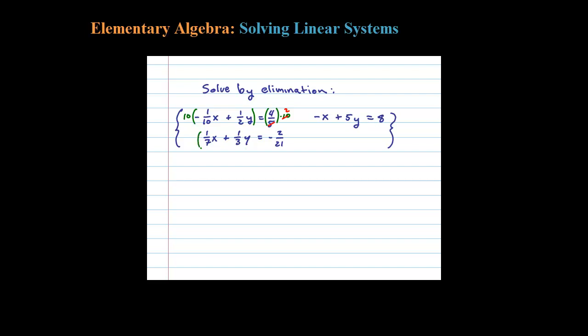Now let's clear the fractions on the bottom equation as well. Let's multiply both sides by 21, that should clear out the fractions. 7 goes into 21 three times, so that's 3x. 3 goes into 21 seven times, so plus 7y equals, and on the right side the 21 cancels, leaving me with negative 2. Here's an equivalent system where I have integer coefficients, no more fractions.